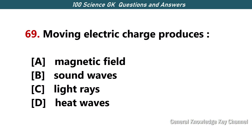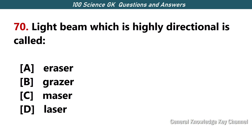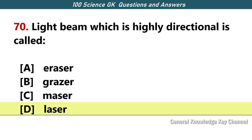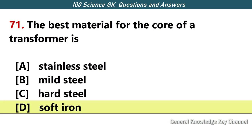Moving electric charge produces — Answer A — a magnetic field. A light beam which is highly directional is called — Answer D — laser. The best material for the core of a transformer is — Answer D — soft iron.